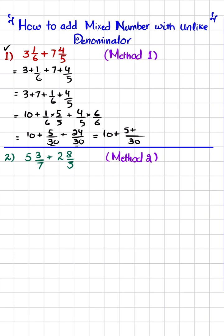So 5 plus 24 gives us 29, making it 10 plus 29/30, which can also be written as 10 29/30. So this is the answer to our first question.